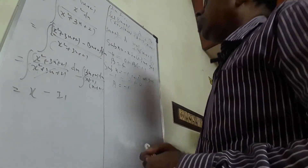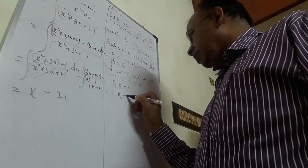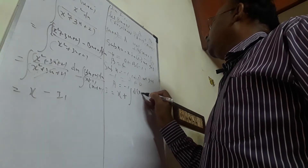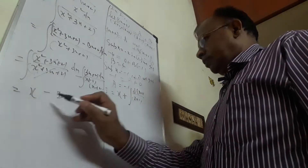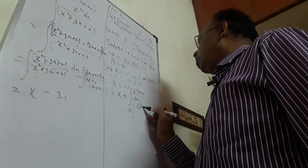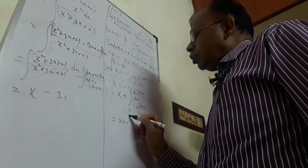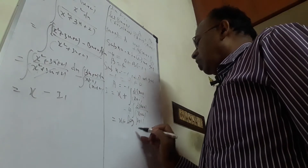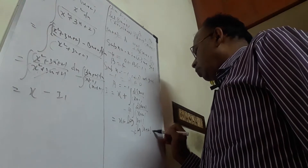Therefore the whole integral now becomes: I equals x, then minus of minus 1 gives plus 1, integral of d(x+1)/(x+1), then minus 4 integral of d(x+2)/(x+2). Therefore the whole thing reduces to x + log|x+1| − 4 log|x+2| + C.